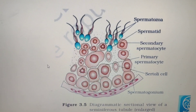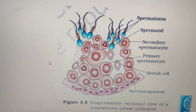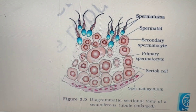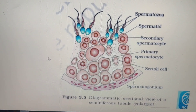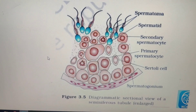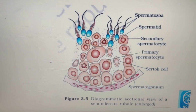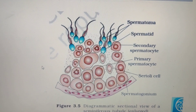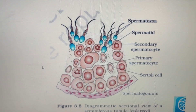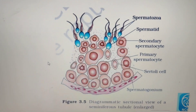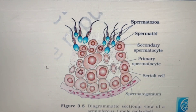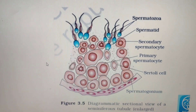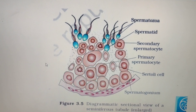In summary, today we covered: the structure of the female gamete, the structure of the female reproductive system, the Graafian follicle and secondary follicle, the difference between spermatogenesis and oogenesis, development of sperm from spermatid, and the structure of a sperm. In the next class we will talk about hormonal control. Thank you.